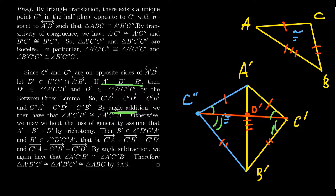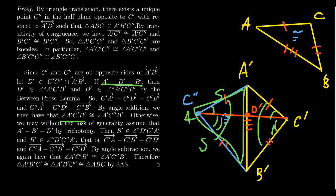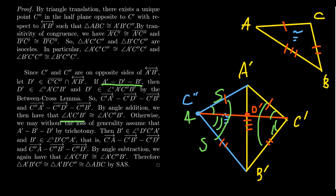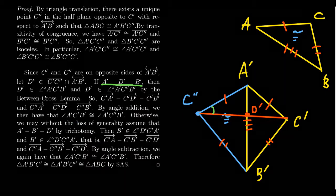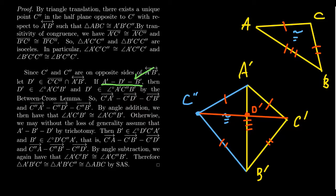Using angle addition, we can add these angles together to get that angle A'C'B' is congruent to angle A'C double prime B'. So then we have a side-angle-side situation: the blue triangle is congruent by side-angle-side, giving us that triangle A'C'B' is congruent to triangle A'C double prime B'. By transitivity of congruence, these two original triangles are congruent as well. This all follows from the case where D prime is between A prime and B prime.